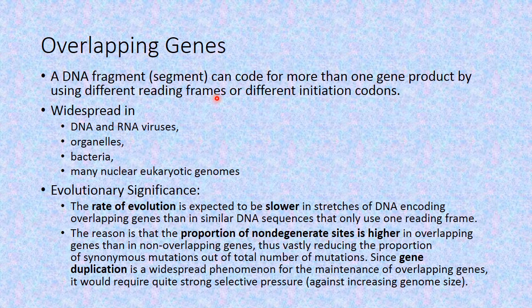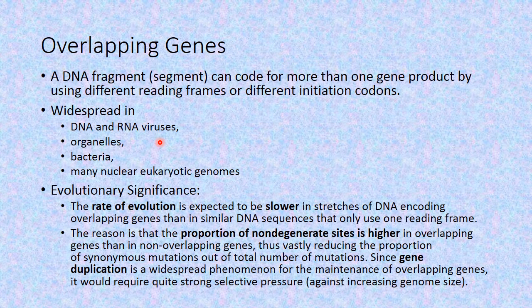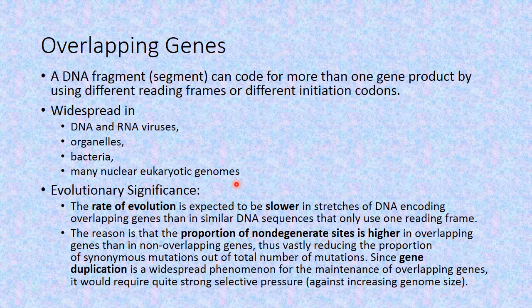The presence of overlapping genes is widespread in nature and a normal occurrence in lower organisms — prokaryotes, various DNA and RNA viruses, various organelle genomes, and bacteria. With the advancement of techniques, many nuclear eukaryotic genomes are also found to have this overlapping tendency in their gene products.